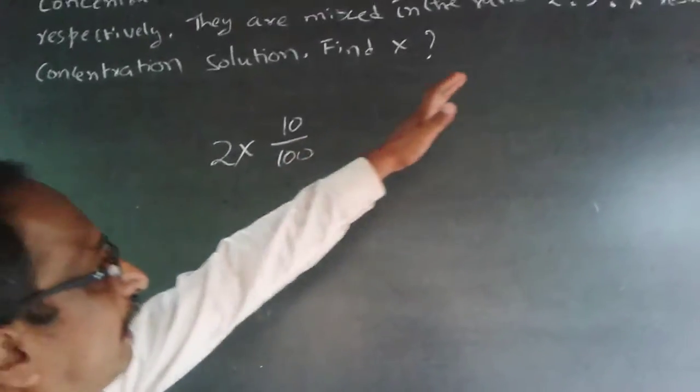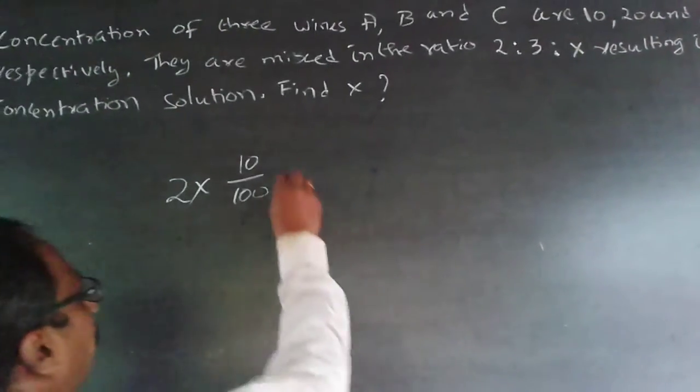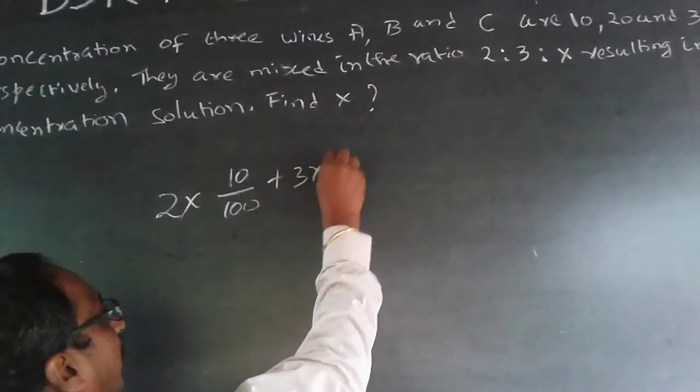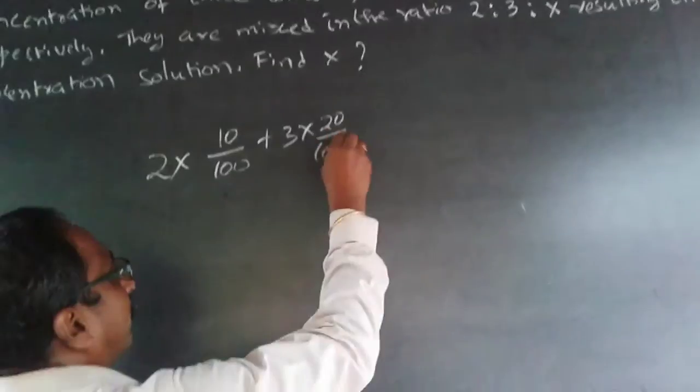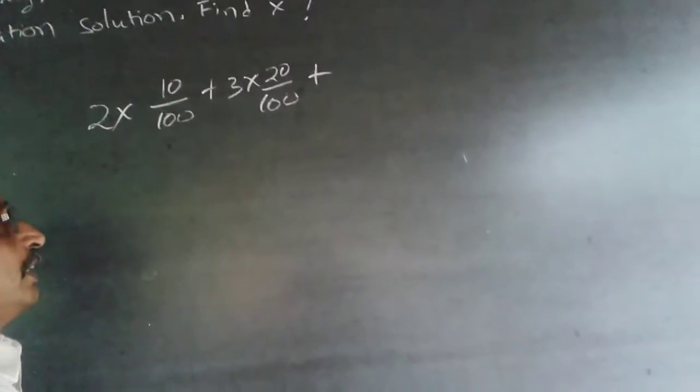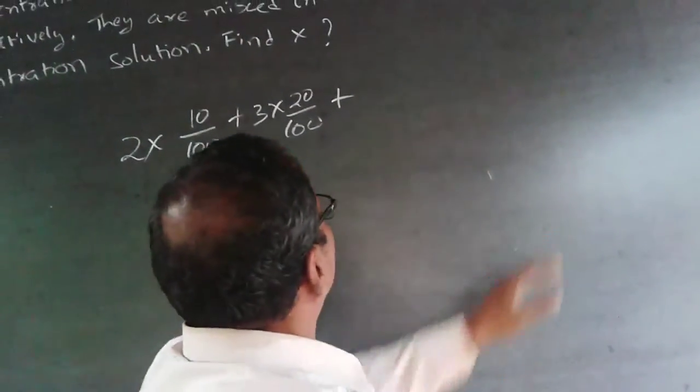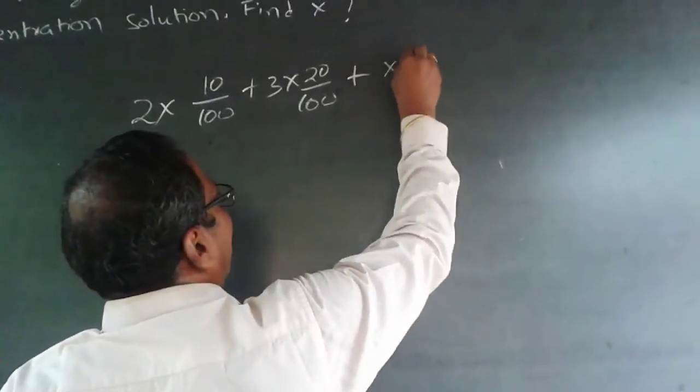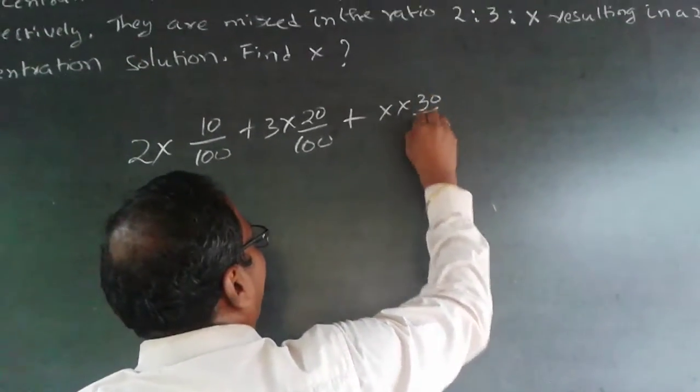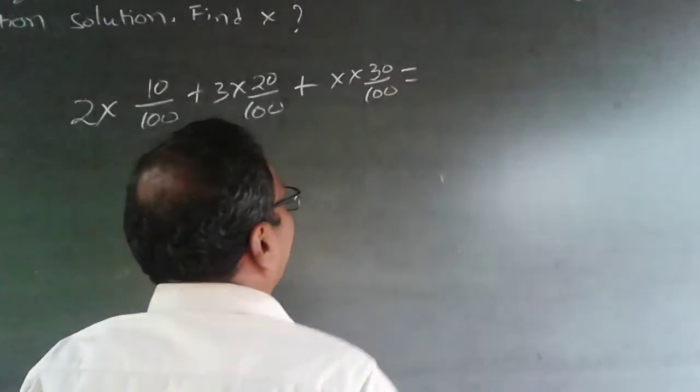Similarly, 3 from 20%, so it will be plus 3×20/100. And the third concentration is not known, that you're going to find out. So third is x×30/100.